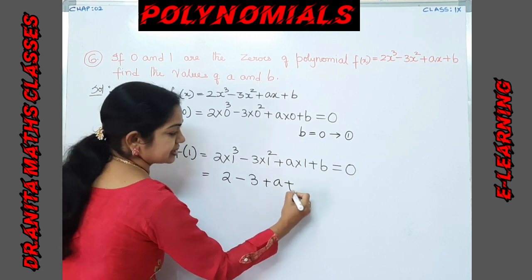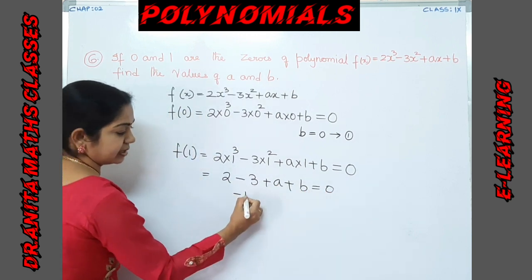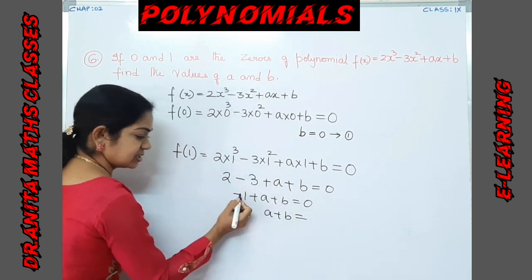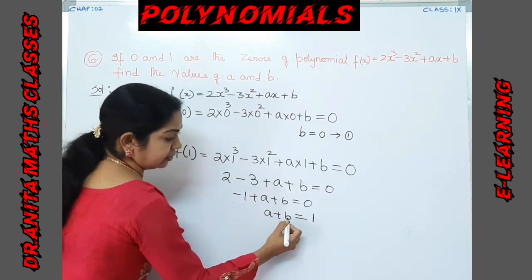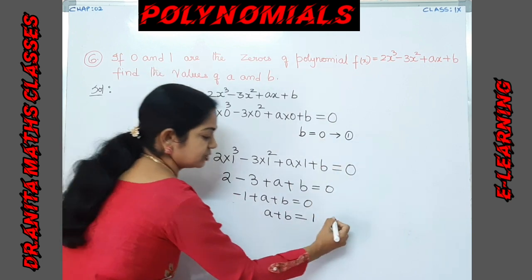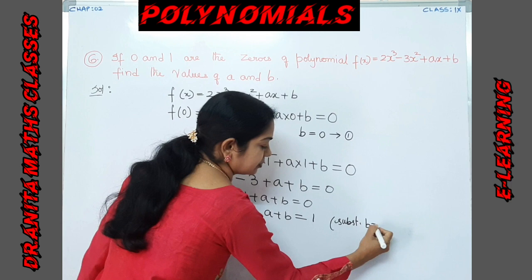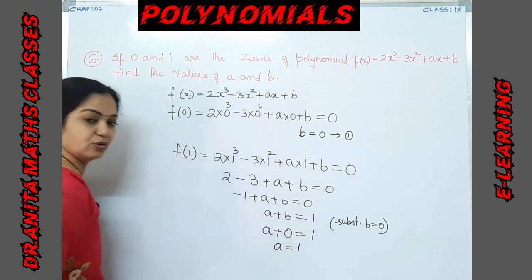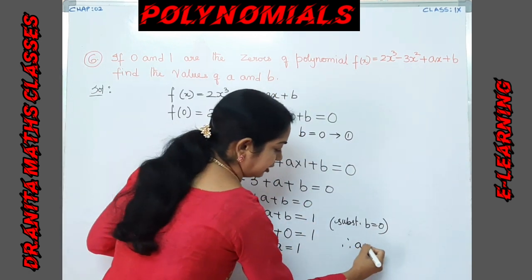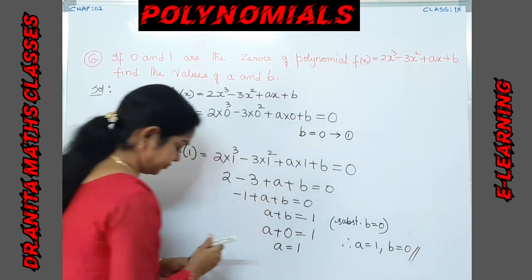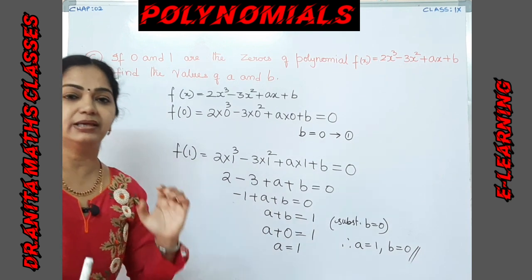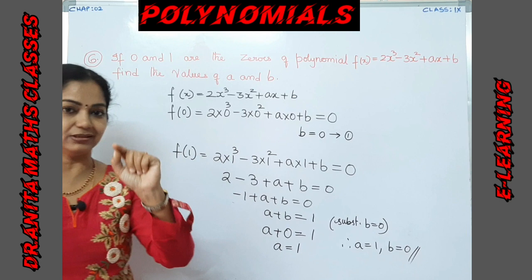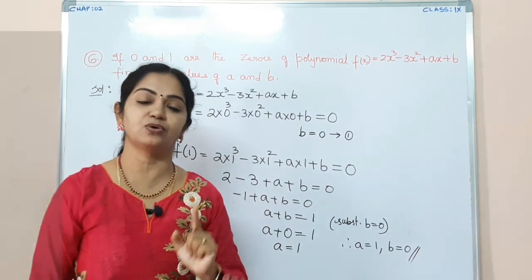Continuing: 2 - 3 + a + b = 0 → -1 + a + b = 0 → a + b = 1. We know from equation 1 that b = 0, so substituting: a + 0 = 1 → a = 1. Therefore, a = 1 and b = 0 is the final answer. In this exercise everything is completed except the third bit of problem four, which is left for you to practice. Hope you have understood — thank you all.